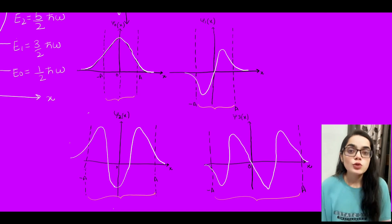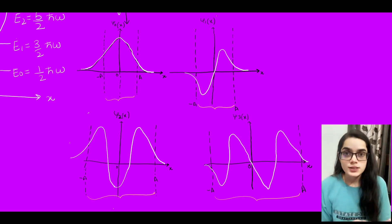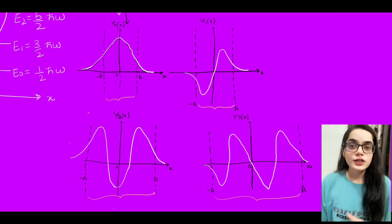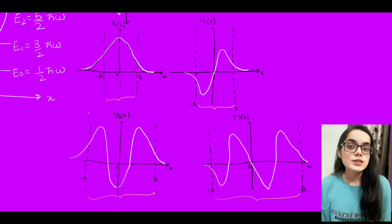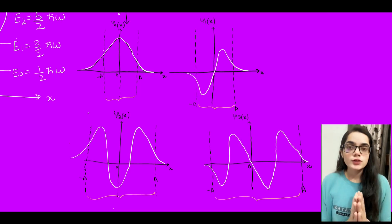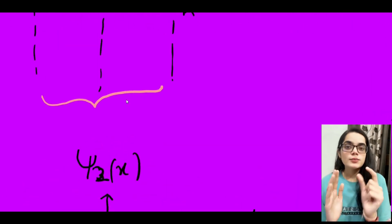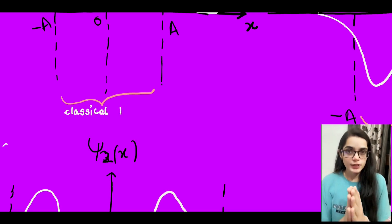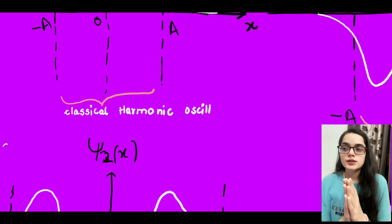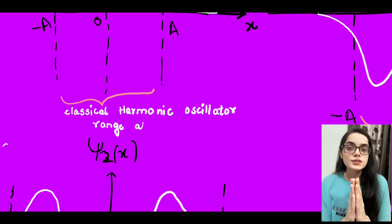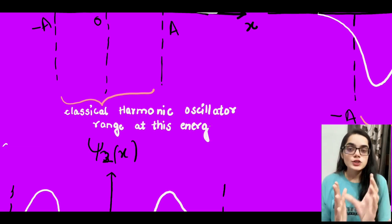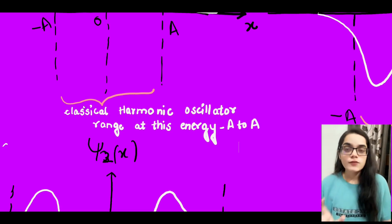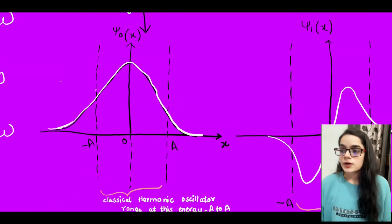I have drawn the classical range from −A to +A. These lines show the classical system — in a mass-spring system, the mass goes from −A to +A. At energy E₀, the particle range −A to A is small. When the energy increases to E₁, the classical range −A to A increases in size, as I have shown in the graphs. At ψ₃, the range −A to A increases further.